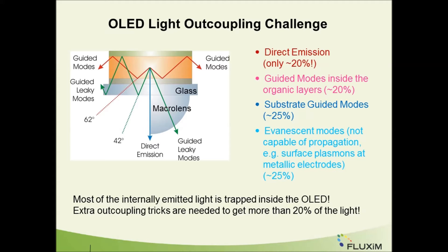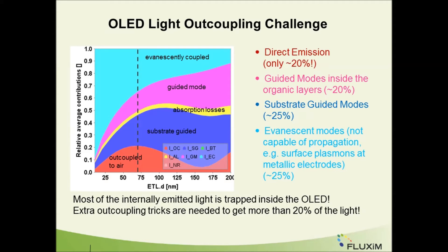SETFOS can easily calculate the relative power emitted in the different optical channels. This is an example of a simulation where the thickness of the ETL was varied on the x-axis. We can see in red that the maximum of the light getting out of the device is obtained for an ETL thickness of approximately 75 nanometers, but it still only represents approximately 20% of the light emitted. In order to get more light out of the device, some optical tricks involving light scattering are required.